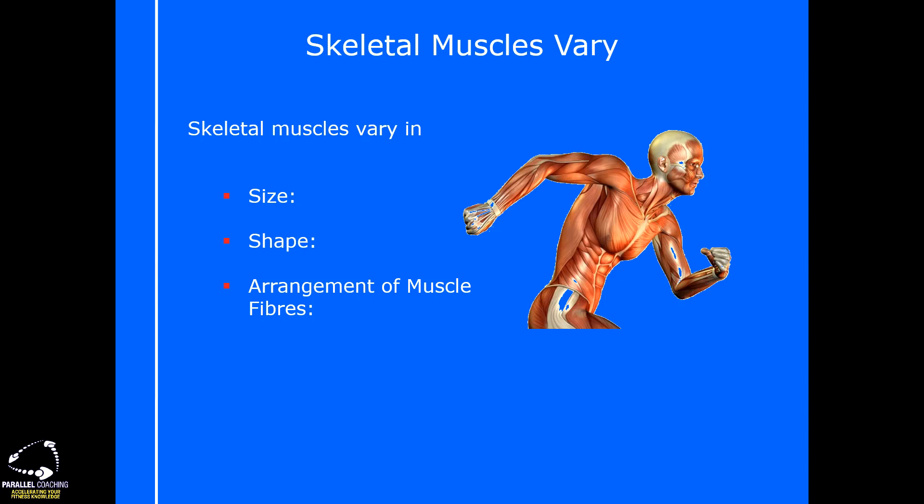Shape also varies — you could have a broad shape like the latissimus dorsi, which is a really broad flat muscle running all the way down the side of the body, compared to a very narrow muscle like the tibialis anterior on the front of the shin. Alongside shape and size, you've also got arrangement of muscle fibers. For your level 3 anatomy you don't necessarily need to know the names of all arrangements, but it may help you understand how muscles create joint action.